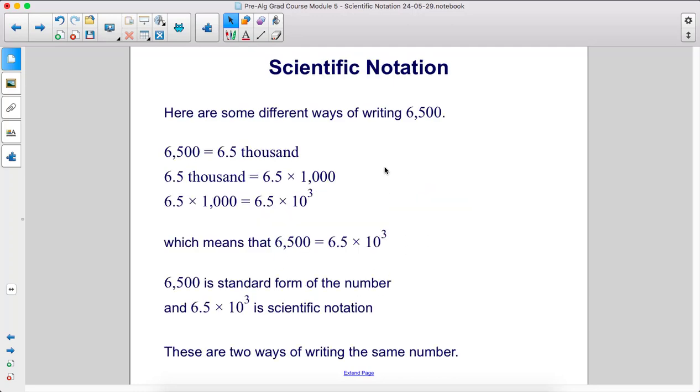Here are some different ways of writing the number 6,500. You could write 6.5 thousand. You could write 6.5 times 1,000. You could write 6.5 times 1,000 is the same thing as 6.5 times 10 to the 3rd, since 1,000 can be rewritten as 10 to the 3rd.